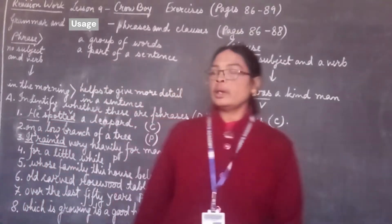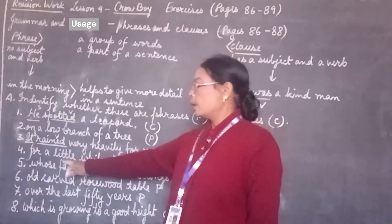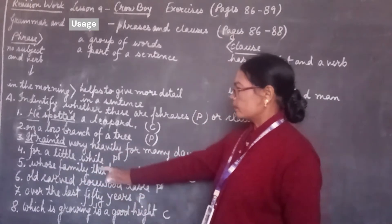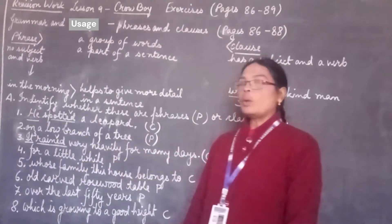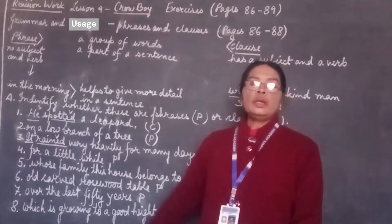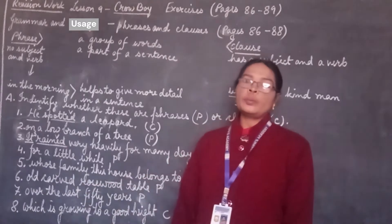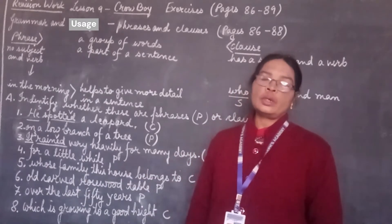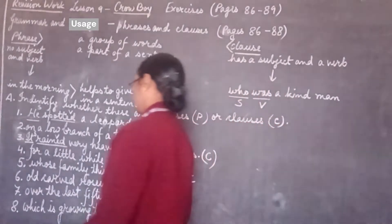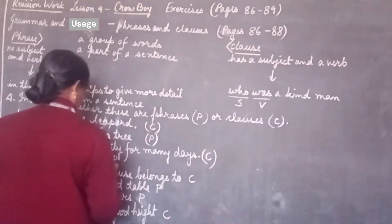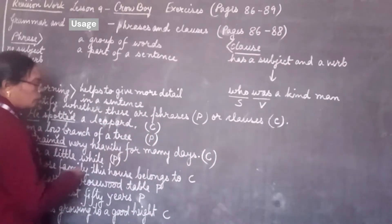Step into number 4. In number 4 it is written: 'for a little while'. In this group there is no subject and there is no verb, so it belongs to our phrase.